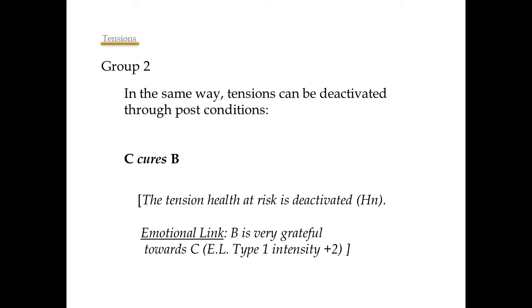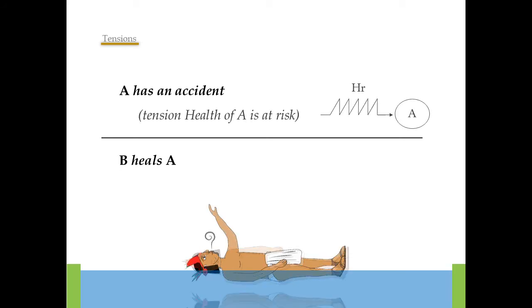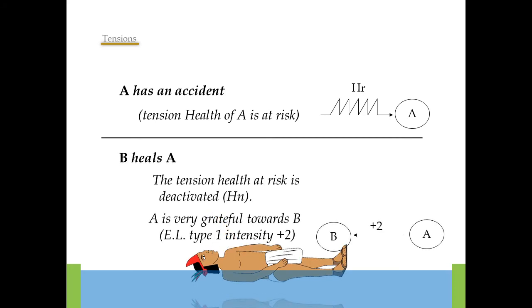So, let's imagine that character A has an accident. As a result, the tension health at risk is activated. Next, let's imagine that character B heals character A. As a result, the tension health at risk is deactivated, and the emotional link A is very grateful towards B is triggered.